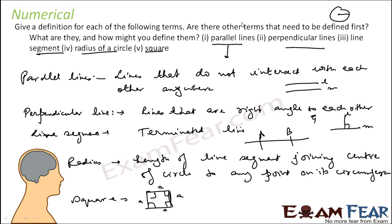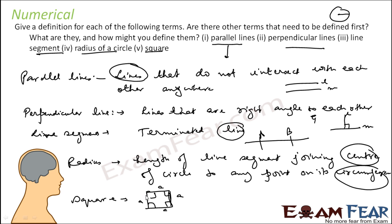Are there any other terms that need to be defined? Yes. If you talk about parallel lines, you need to define what a line is. If you talk about line segment, you need to define what a line is. For radius, you need to define center of the circle, what a point is, and what circumference is. For square, you need to define what a side and an angle are. So we need to define other terms also, which we currently cannot define.